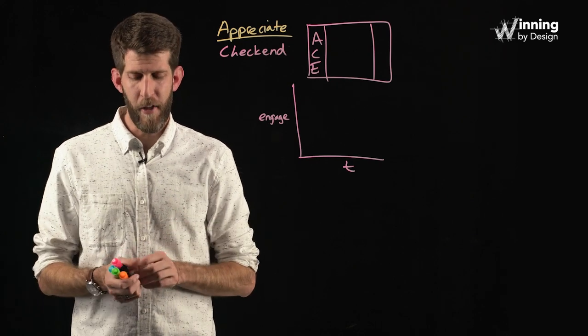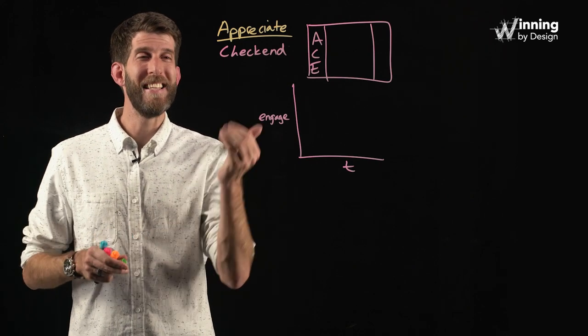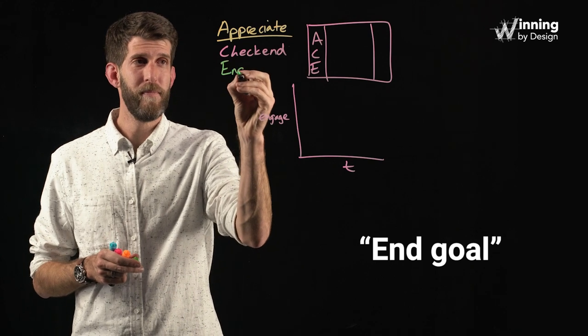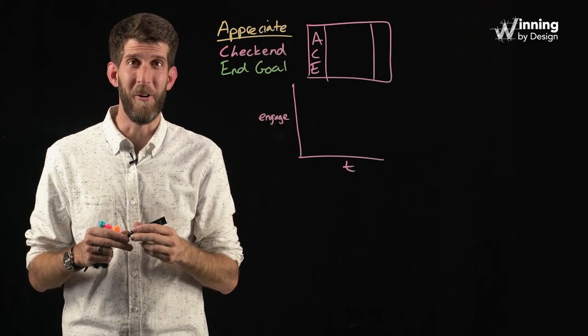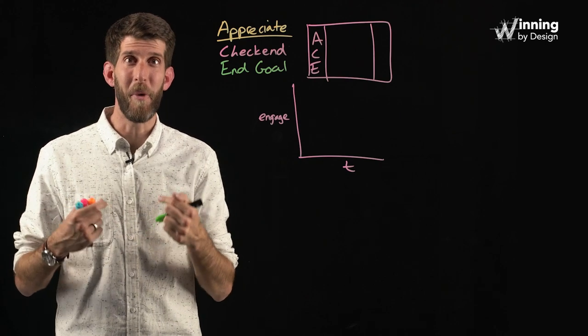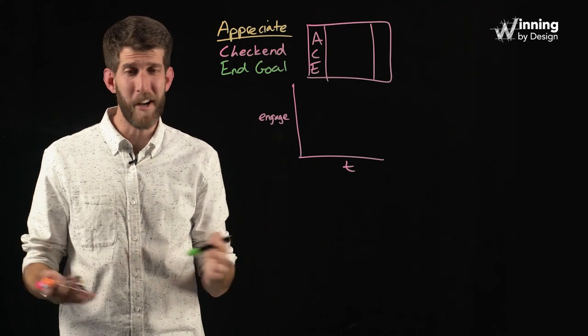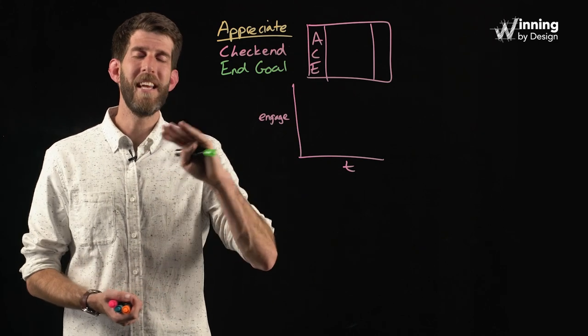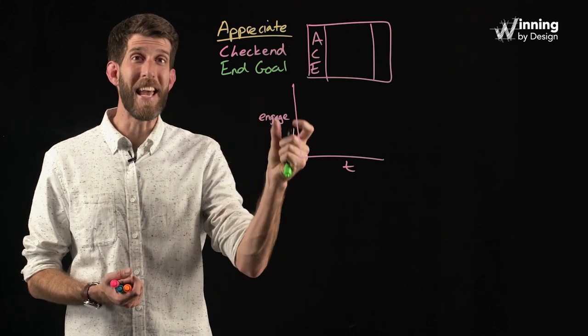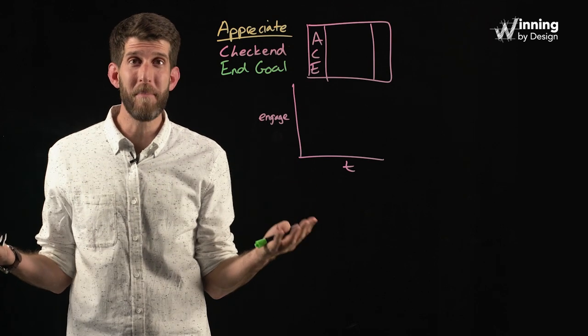Now the third step that we want to go into is the end goal. The end goal is all about the customer's end goal. It has nothing to do with what we want to do, which typically in prospecting is book a 30-minute discovery call. So the end goal is focused on what they want to get out of the call. Why did they even show up to this meeting?